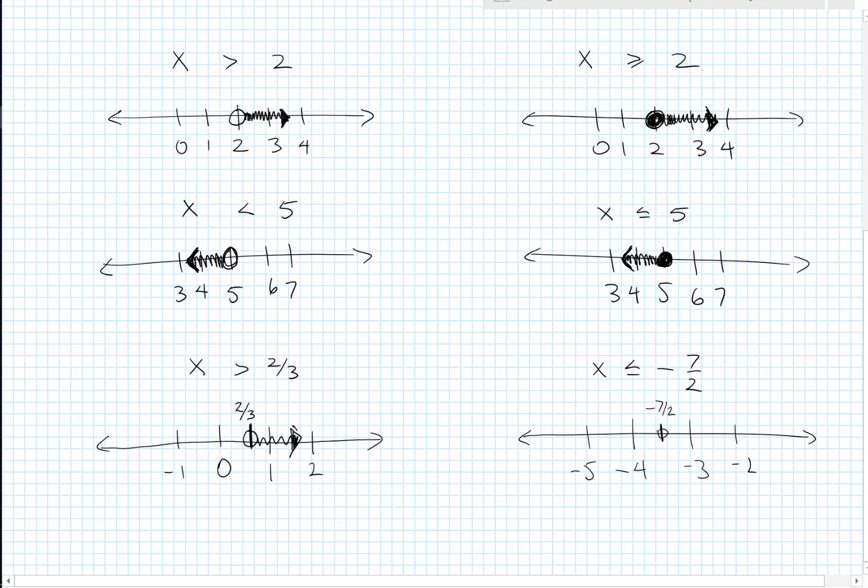We have a solid circle because this is less than or equal to. And then, we graph everything to the left. And again, you can check the integers to make sure you've got the arrow pointing in the right direction. Negative 4, is that less than negative 7 over 2? Well, if you think of negative 7 over 2 as negative 3 and a half, then yes. Negative 4 is less than or equal to negative 7 over 2.